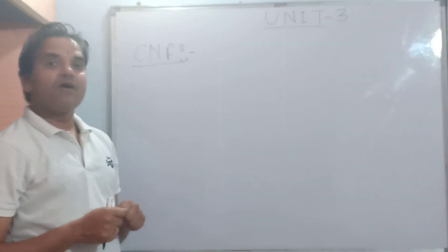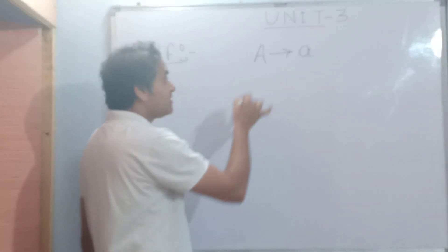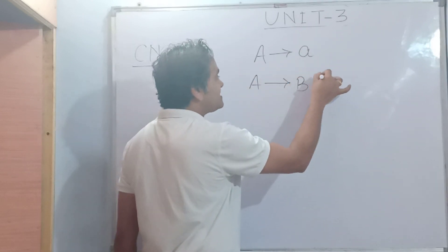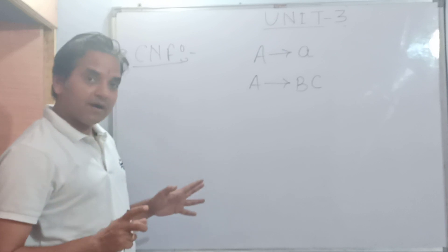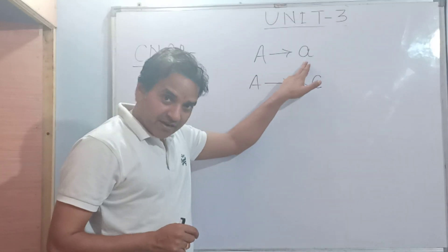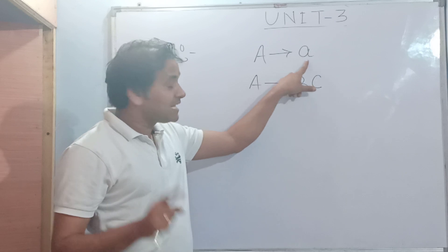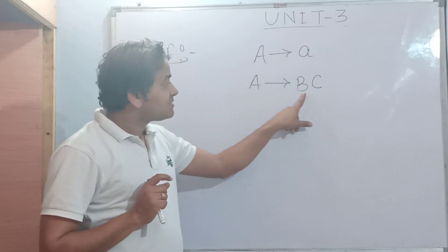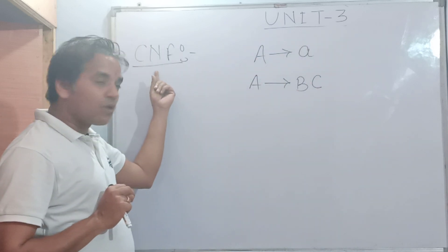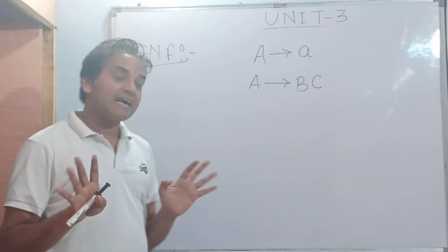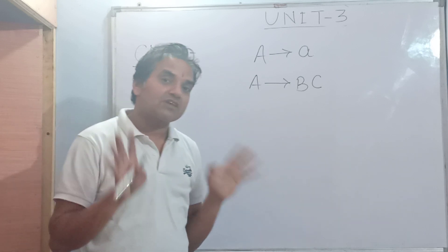A grammar is in Chomsky Normal Form if productions are of the form A → BC, where A, B, C are variables, or A → a, where a is a terminal. This means CNF does not allow null productions or unit productions.